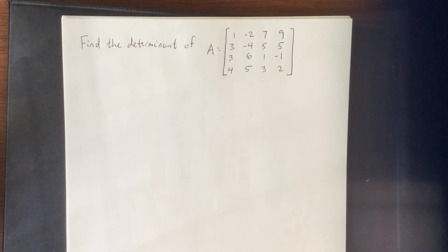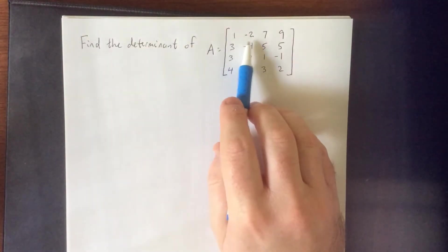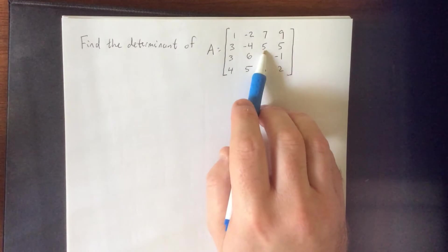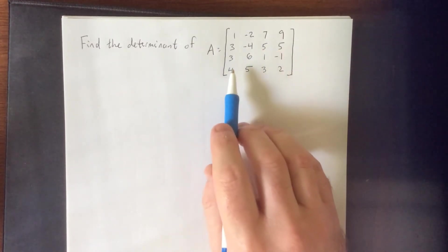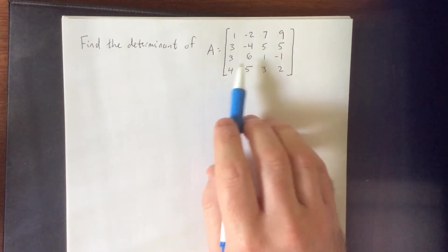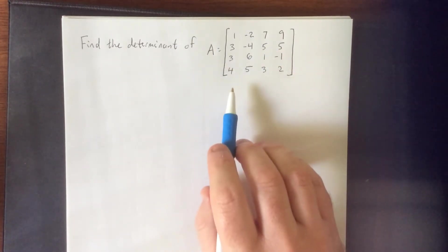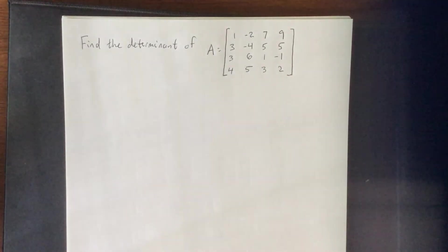In this example, we've been given a 4x4 matrix. Matrix A is: first row, 1, -2, 7, 9; second row, 3, -4, 5, 5; third row, 3, 6, 1, -1; and fourth row, 4, 5, 3, 2.